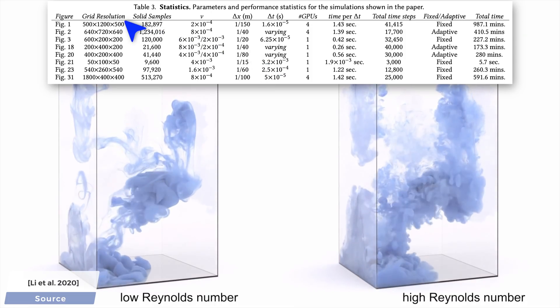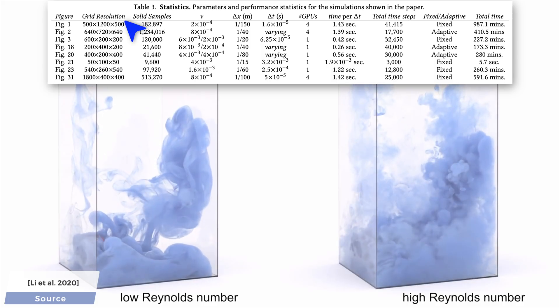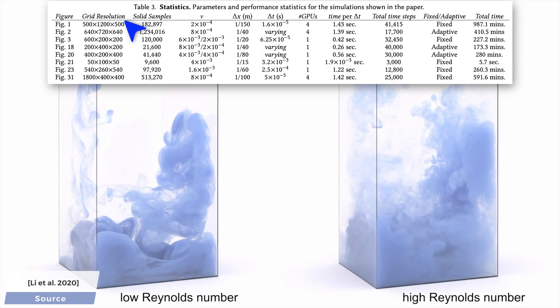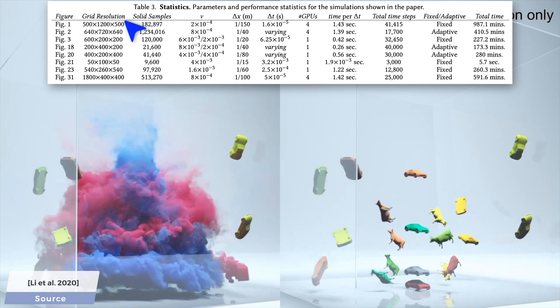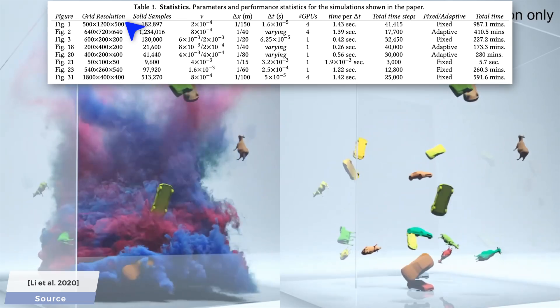The grid resolution also matters a great deal, which specifies how many spatial points the simulation has to take place in. The higher the resolution of the grid, the larger the region we can cover, and the more details we can simulate.